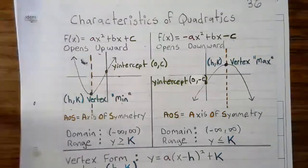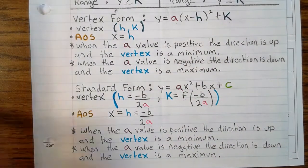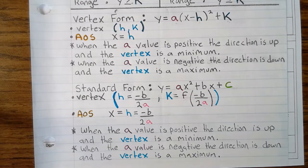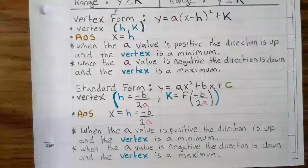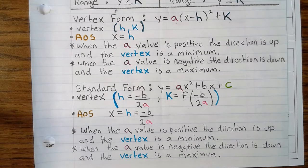Now let's look at vertex form and standard form. Vertex form is y = a(x - h)² + k, where the vertex is (h, k). The axis of symmetry is x = h. When the a value is positive, the direction is up and the vertex is a minimum. When the a value is negative, the direction is down and the vertex is a maximum.